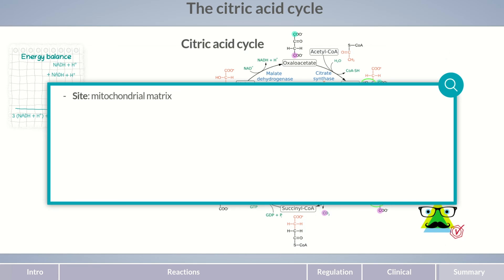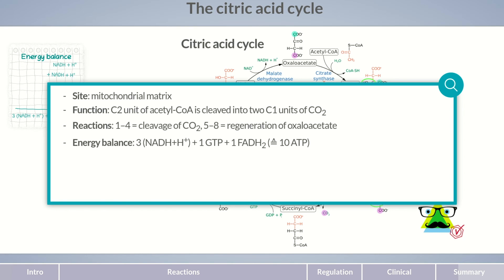The citric acid cycle is a central metabolic pathway that occurs in the mitochondrial matrix. Cleavage of the C2 unit of acetyl-CoA into two molecules of carbon dioxide occurs through oxidative decarboxylation in the first four reaction steps of the citric acid cycle. The remaining four reaction steps are required to regenerate the carrier molecule oxaloacetate from succinate by a reaction path similar to beta-oxidation. The energy balance of the citric acid cycle for each molecule of acetyl-CoA is 3 NADH and H+, 1 GTP, and 1 FADH2.